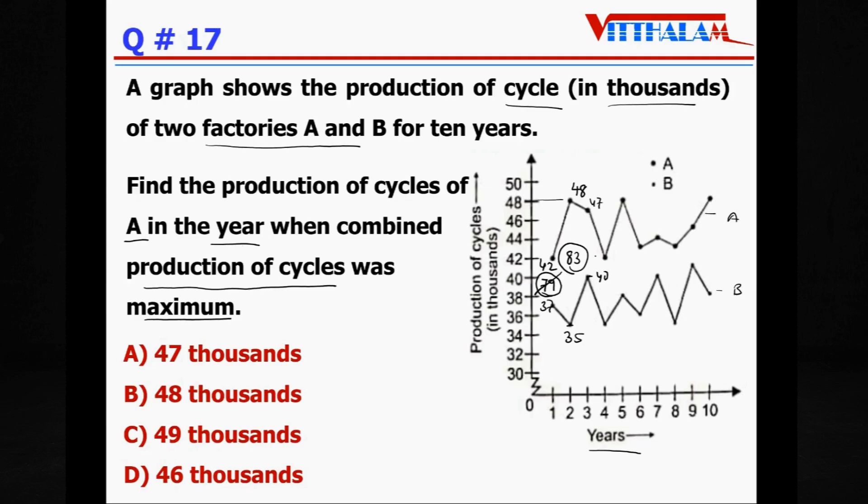Third year, that is 40 and this is somewhere around 47, so 40 and 47, so it is 87. Forget about 83. Then fourth year, that is the same as previous one.